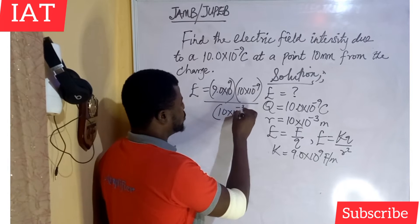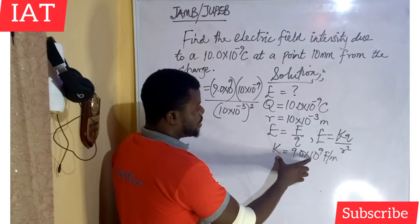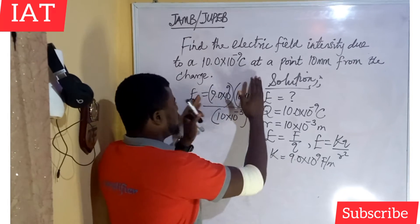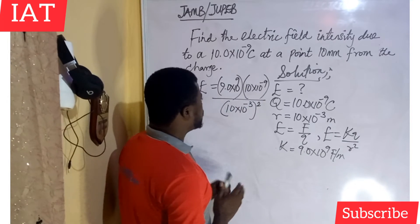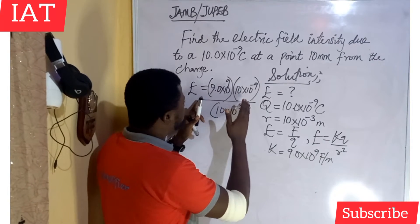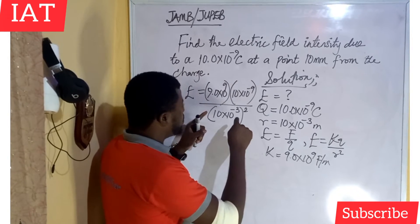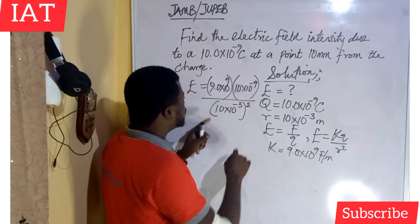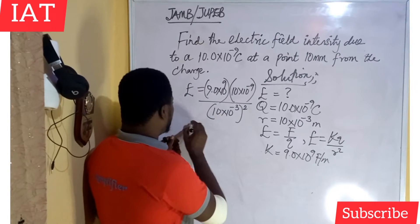Sometimes the value of K might not be given in your exams — when it is not given, know that it is a constant and just apply it. You can treat this using the indices law or using a calculator. I'll drop a link to the video on the product rule or multiplication law of indices in the description. Let's work through this using the calculator.